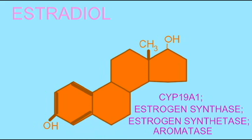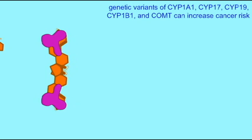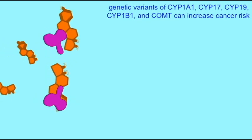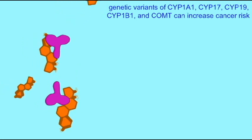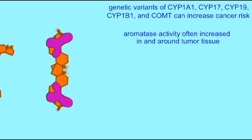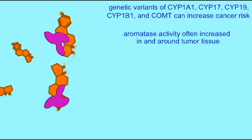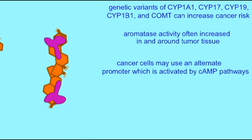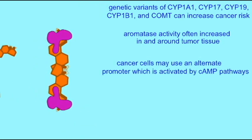Because estrogen is synthesized as part of a pathway involving many proteins, there are a number of polymorphisms or variations in genes which can increase the production of estrogen. So some women make more estrogen than others, and genetic variants such as the genes given here can increase cancer risk. Aromatase activity is often increased in and around tumor tissue, suggesting that this was one of the reasons these cells became cancerous — the increased production of estrogen around the cancer cells themselves.